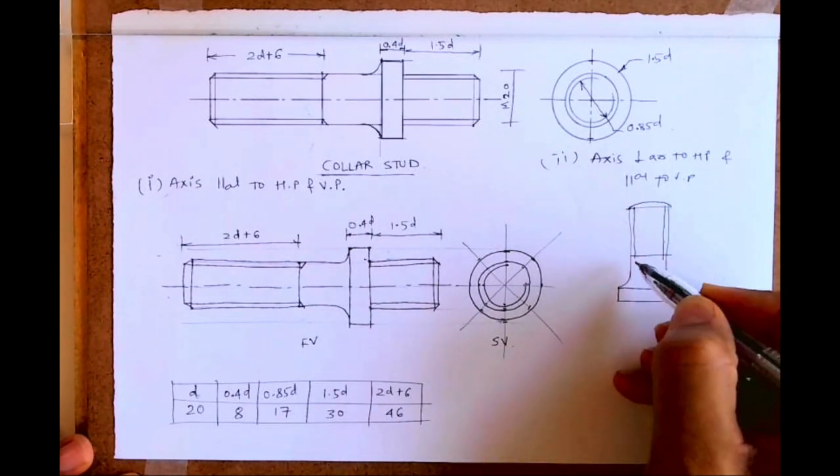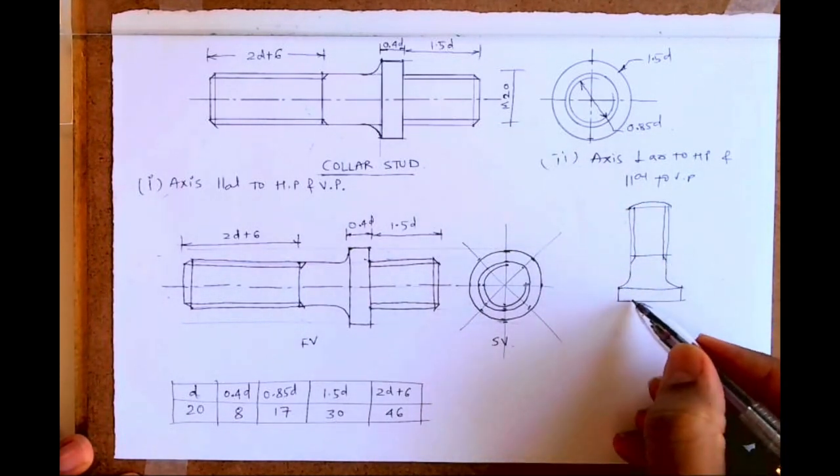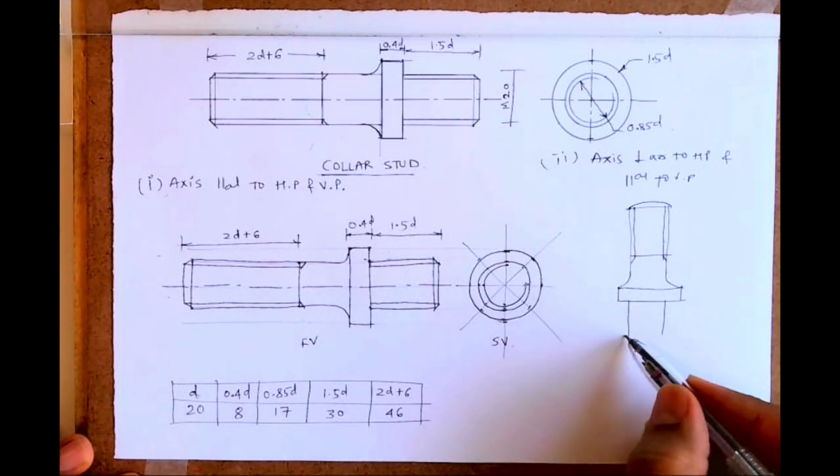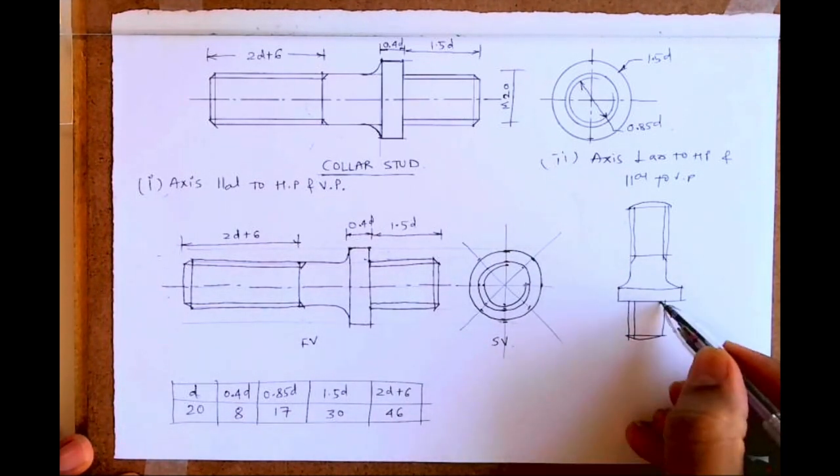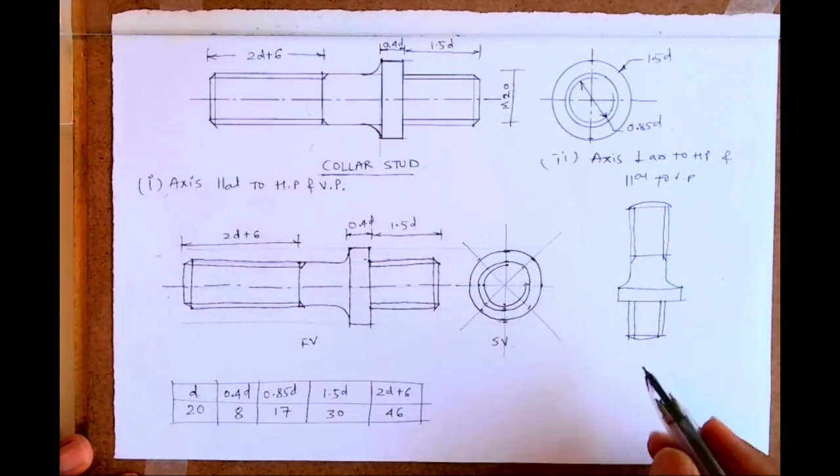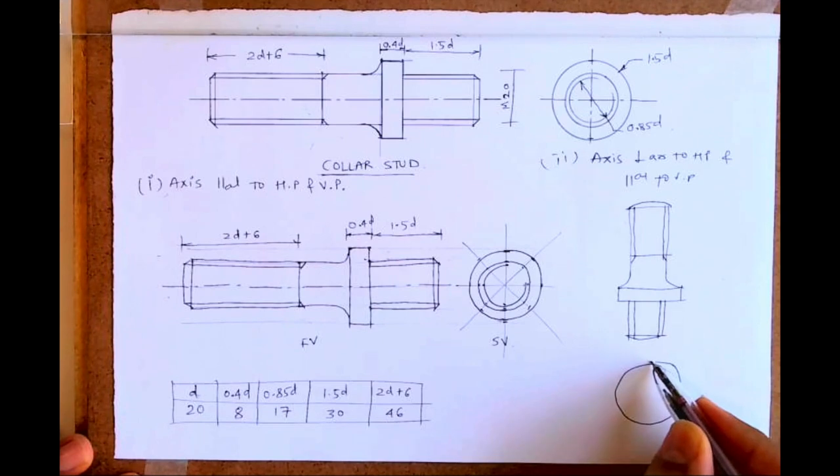Approximation. Sometimes we can draw this screw line also. Instead of that inclined line, we can draw this way also. Remember that. And this is the outcome, and we have a bigger circle for that portion, outside portion, 1.5D.